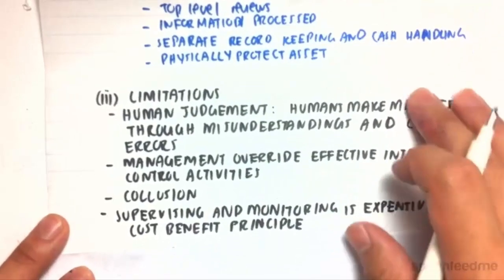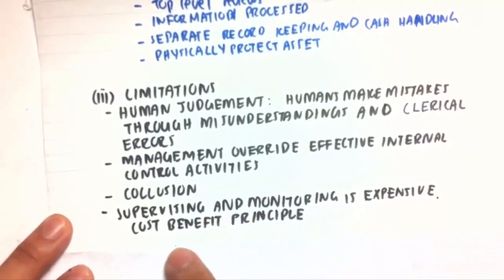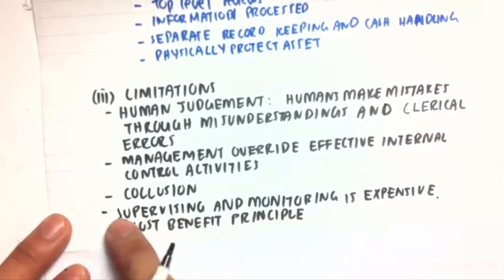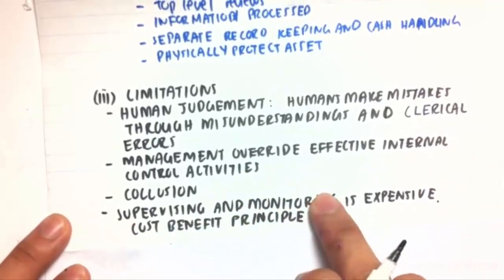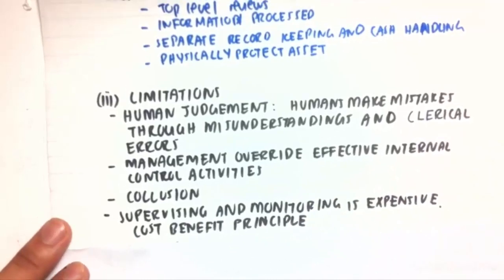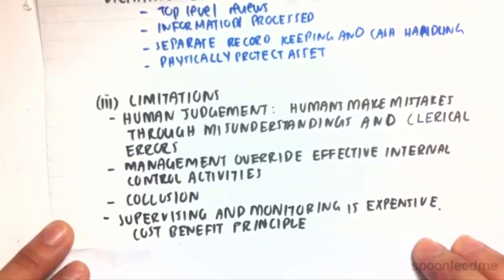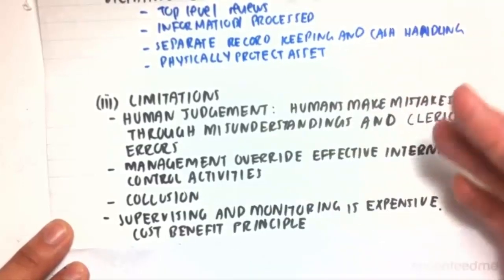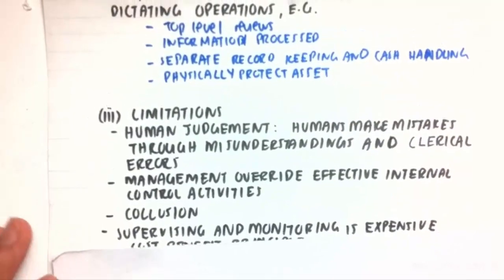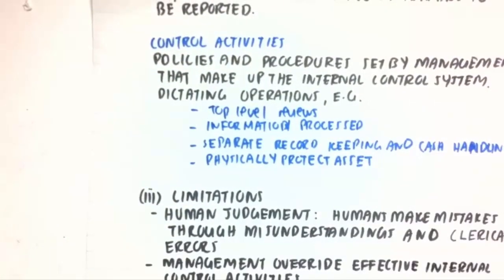And lastly, supervising and monitoring activities are actually very expensive, and we need to weigh up the costs and benefits. If the cost of extra supervising and monitoring is much greater than the benefit of having internal control over something, then we might need to put that on the back burner because it may be overly expensive and we just can't afford it. Thanks for sticking around today, guys — I hope you learned something.